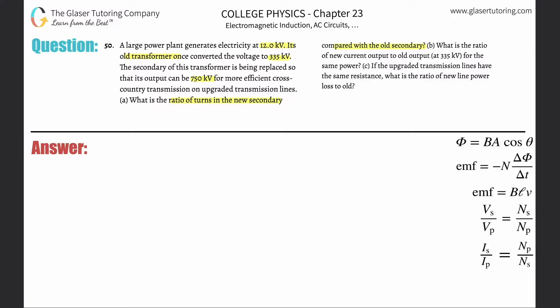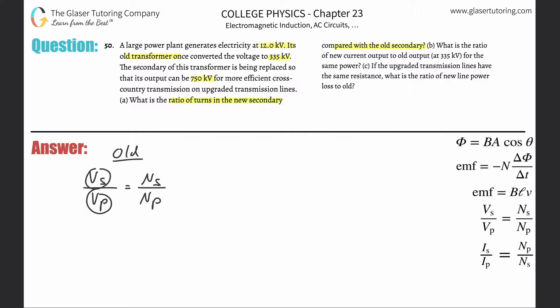Let's set up two equations — one for the old transformer. We're talking about voltage and number of turns, so we're going to be using the transformer equation. The voltage in the secondary divided by the voltage in the primary is equal to the number of turns in the secondary divided by the number of turns in the primary. The primary is always the input; the secondary is always the output.